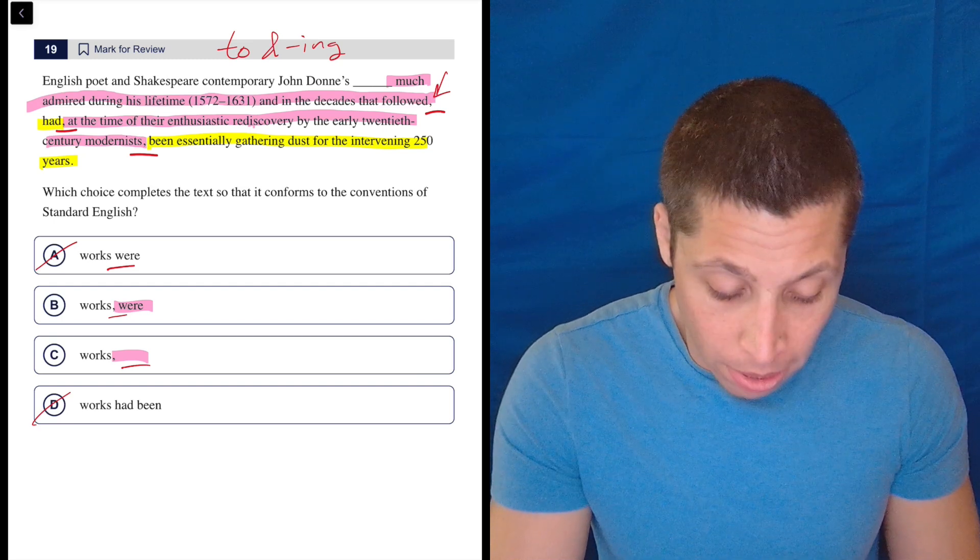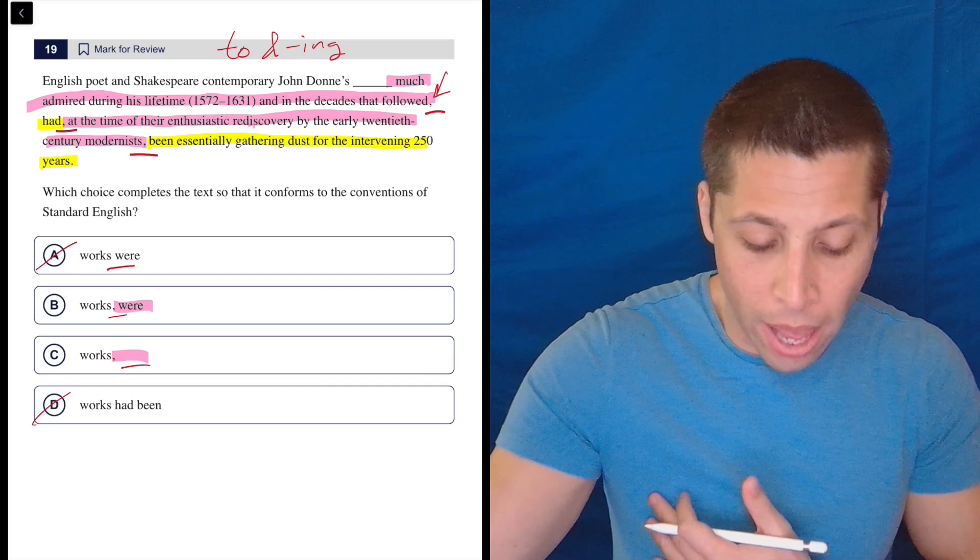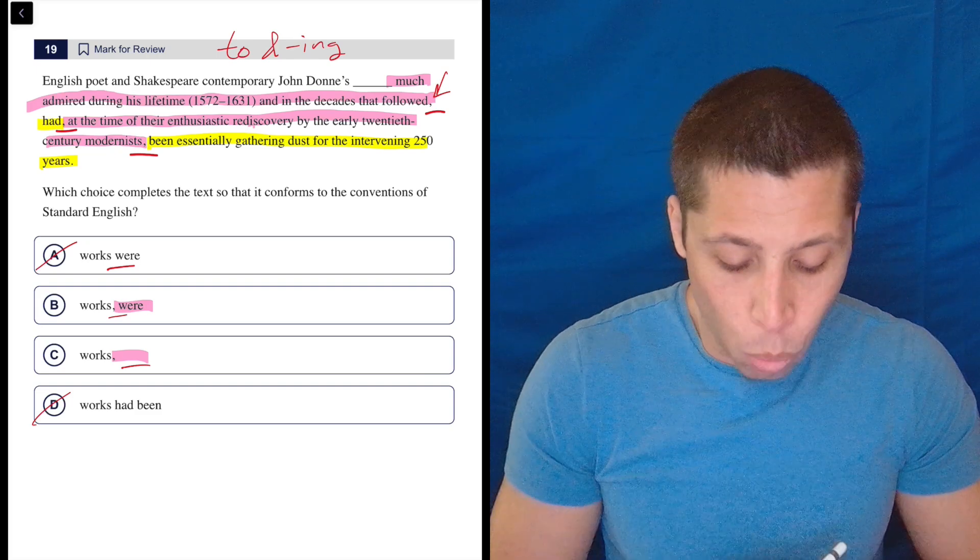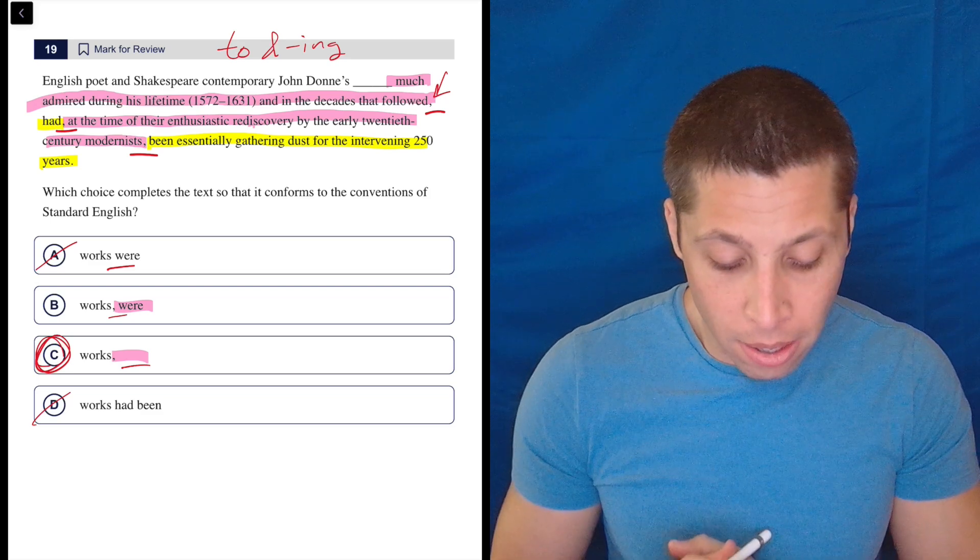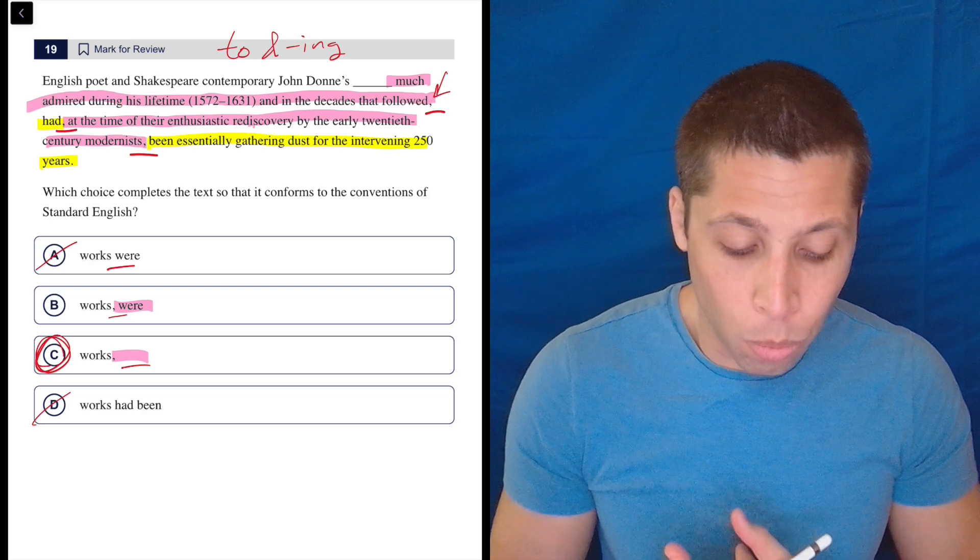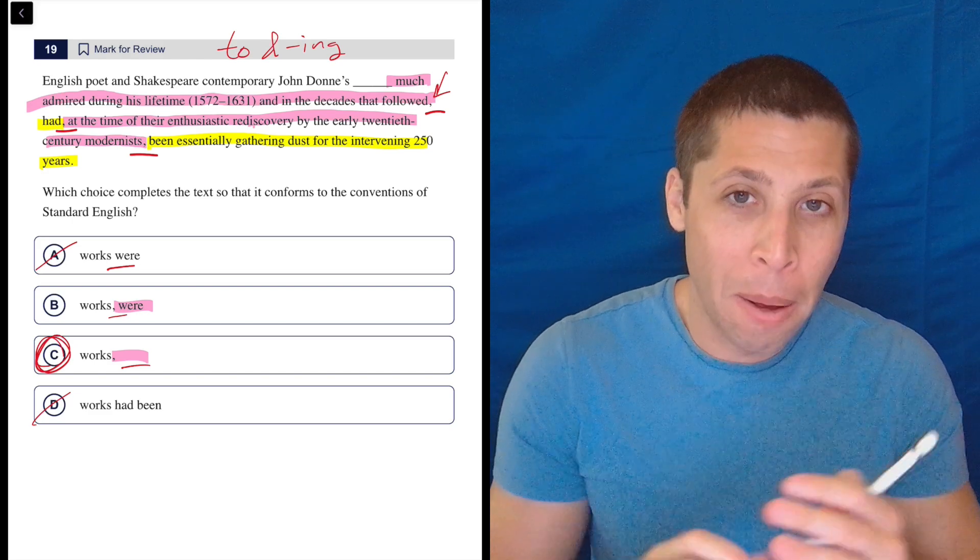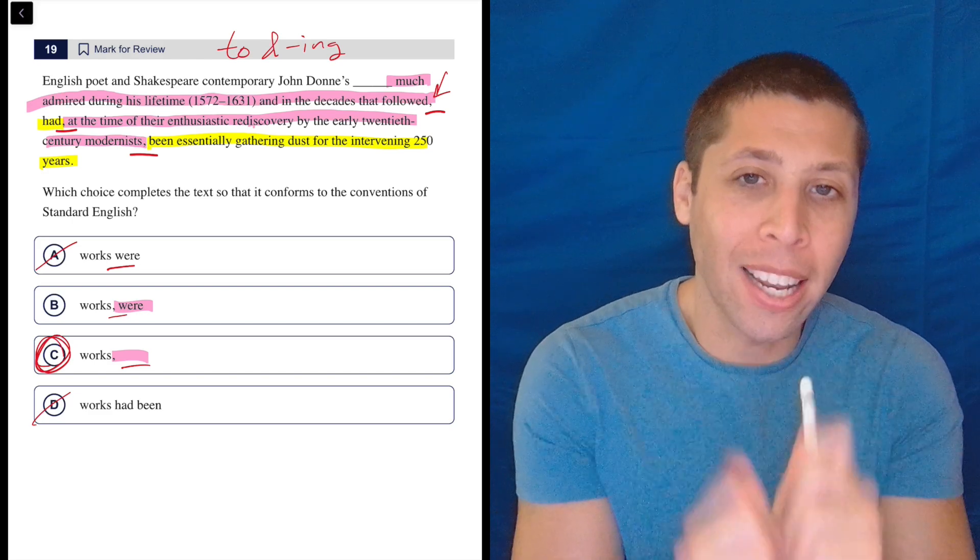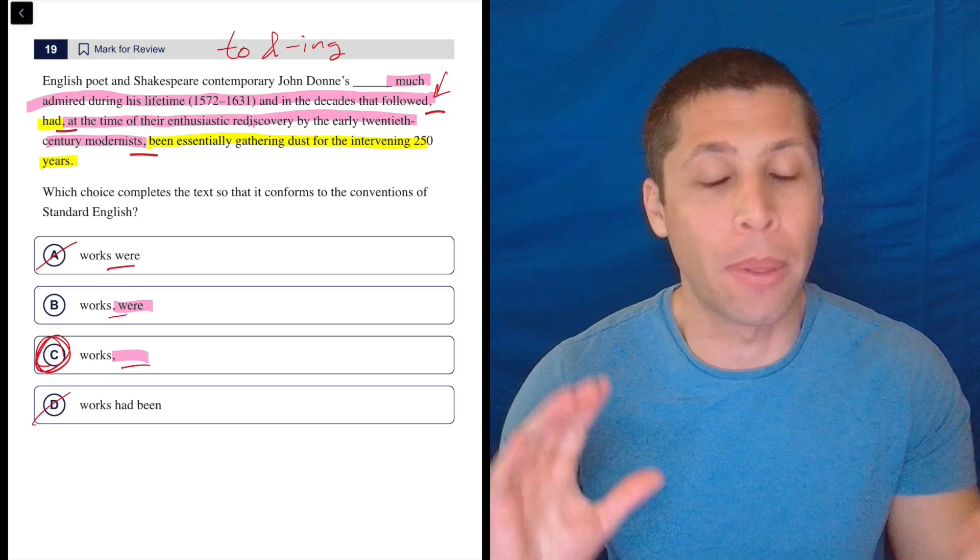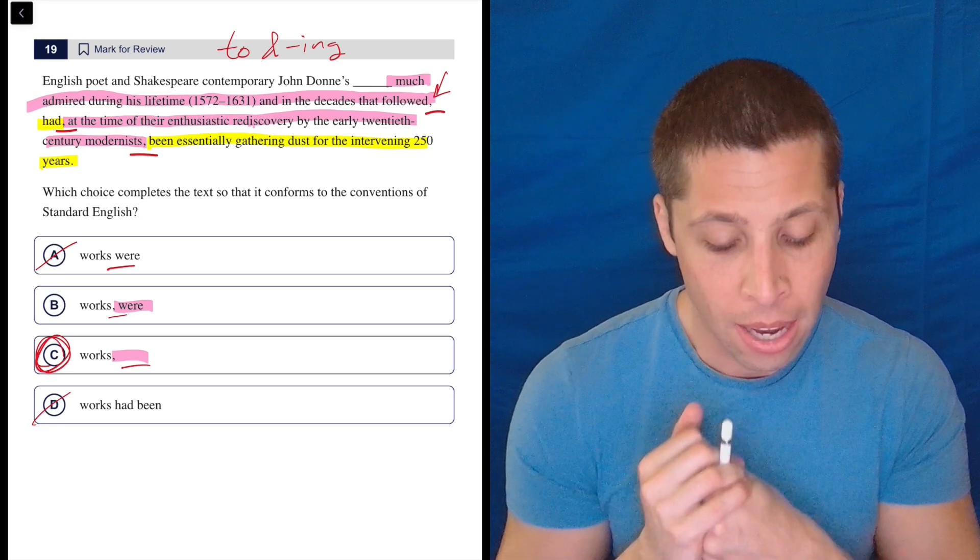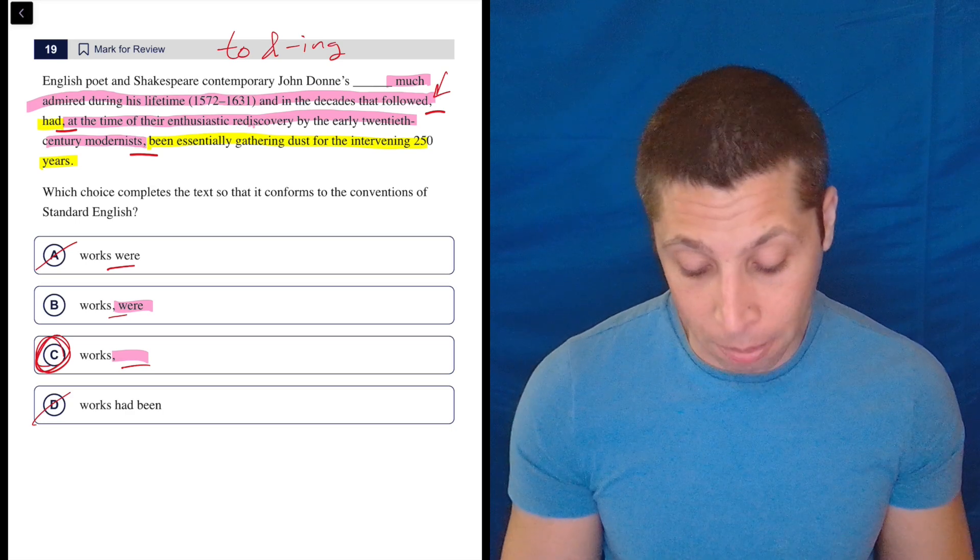So we don't need the were because we're not really continuing the thought in the same way with the subject and a verb. We are just kind of adding on this extra description. Right. The works of John Donne, we're saying were much admired during his lifetime, but we're not saying it as a sentence. We're adding that piece in as an extra piece of information. So we can't put that verb in. Otherwise, it completely messes up the flow of the sentence.